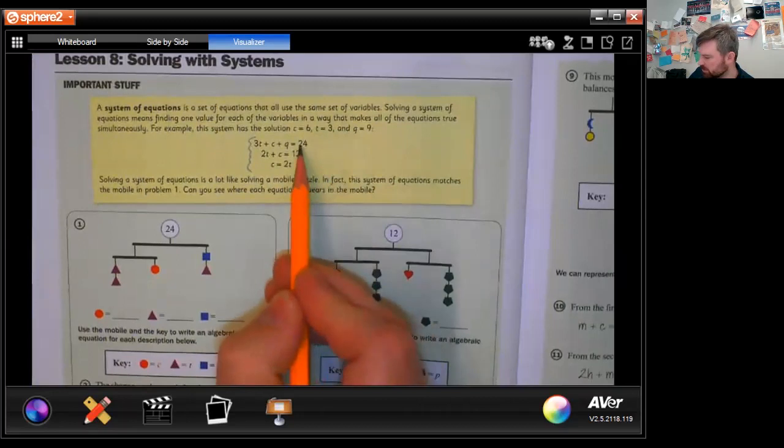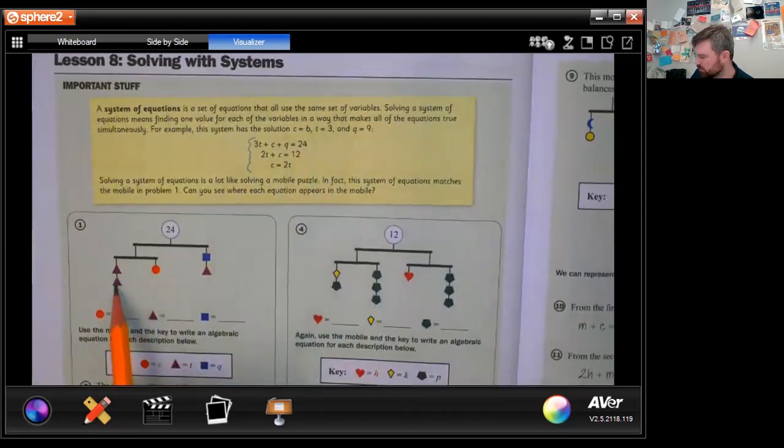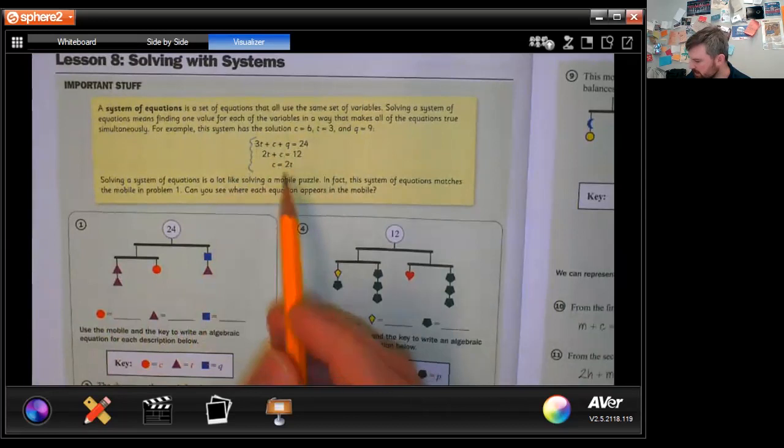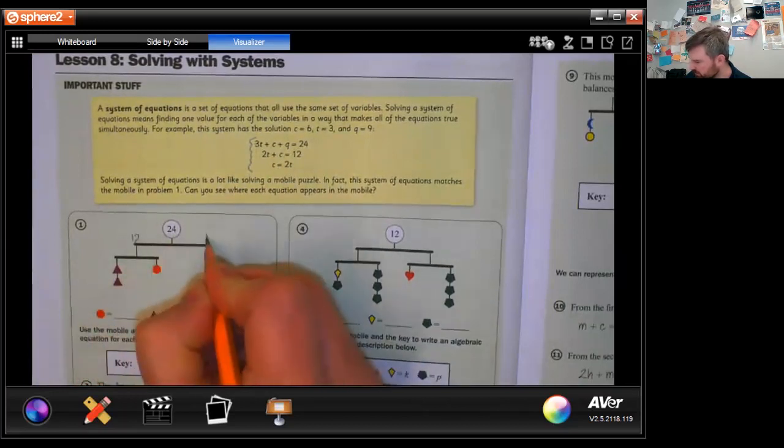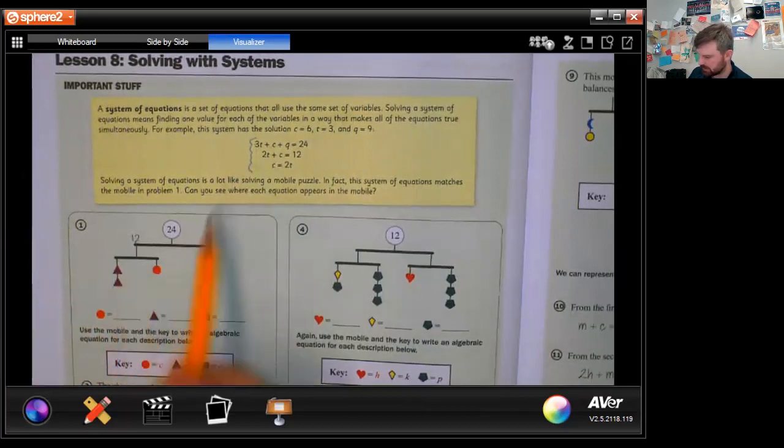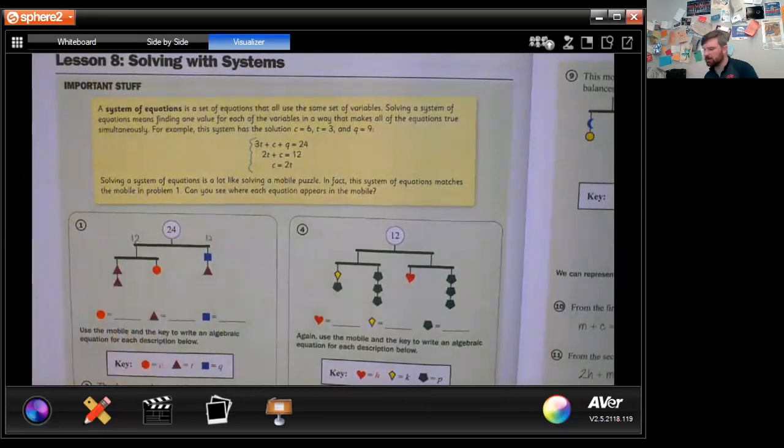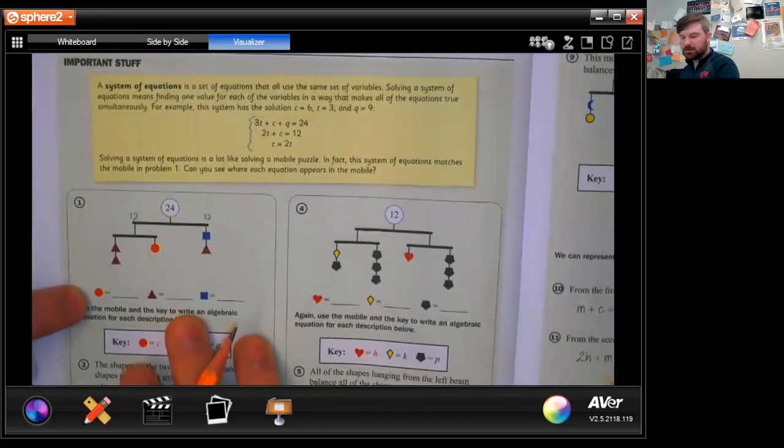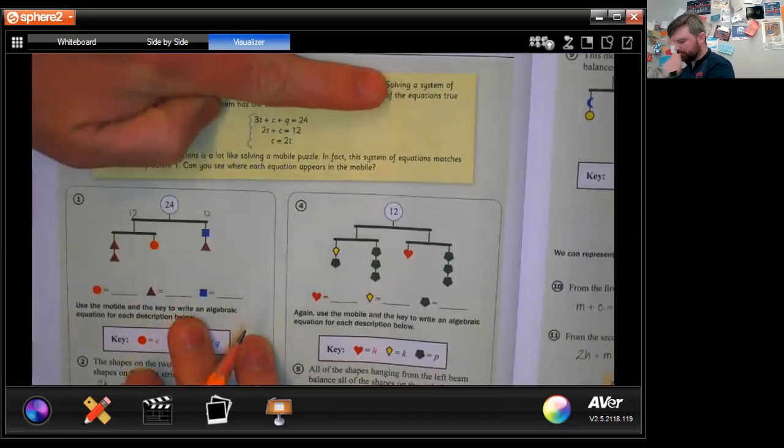So here we have equals 24. So they're adding three triangles. So three T plus a circle plus a square equals 24. They split the 24 into 12 and 12. So they have two triangles plus a circle equals 12. And then the last one, they have a circle equals two triangles. So we want to know what a circle, triangle, and square equals, not necessarily looking at their answers up here.